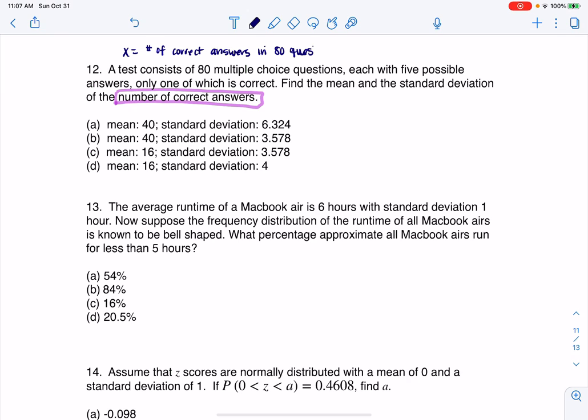And you can imagine if you were taking a multiple choice exam and just going through it, you could get zero of the 80 correct, one of the 80, two, three, all the way up to you might get 80 out of 80, but this is definitely a discrete numerical variable. We would count the number of answers we got correct.